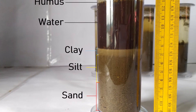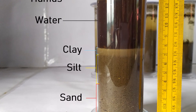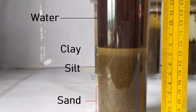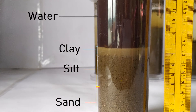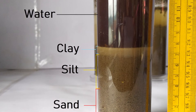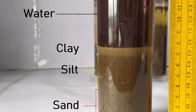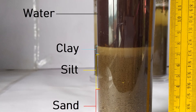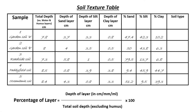Starting with the first sample container, measure the depth of the sand, silt, and clay layers using a measuring scale. If using graduated cylinders, you can directly use the milliliter graduations printed on the cylinder. Note down the depth of each layer in centimeters, millimeters, or milliliters, and do the same for all soil samples. Tabulate your observations and calculate the percentages of sand, silt, and clay for each soil sample using the formula given. Then determine the soil texture type of each sample by plotting the percentage results on the soil texture triangle chart.